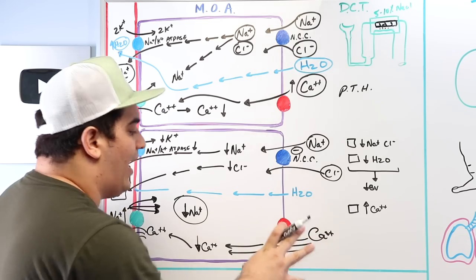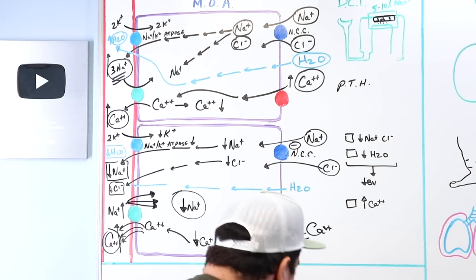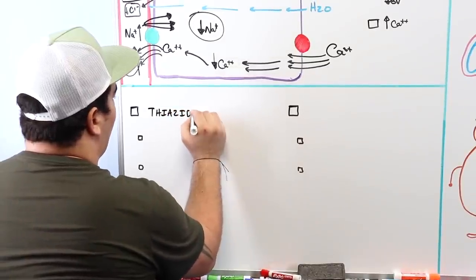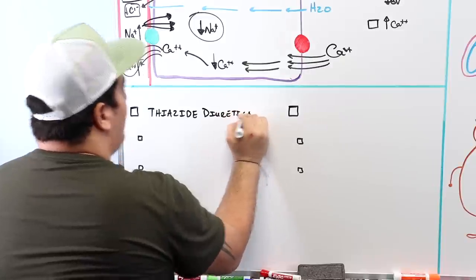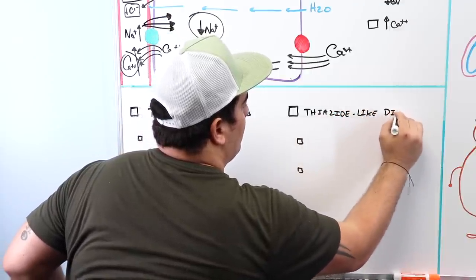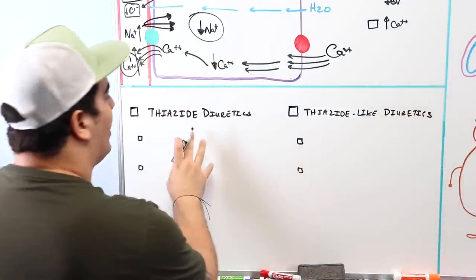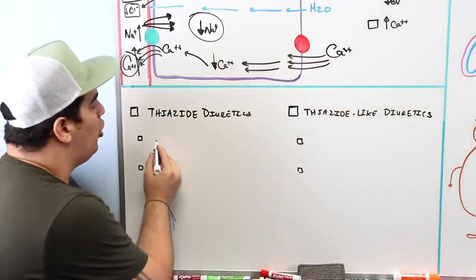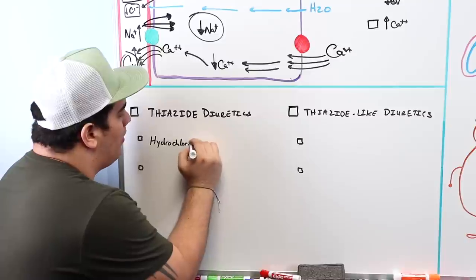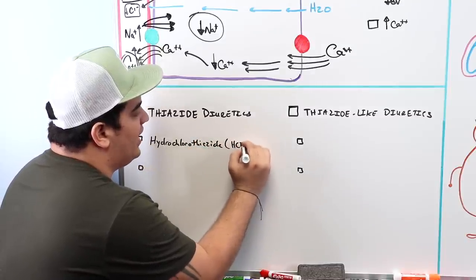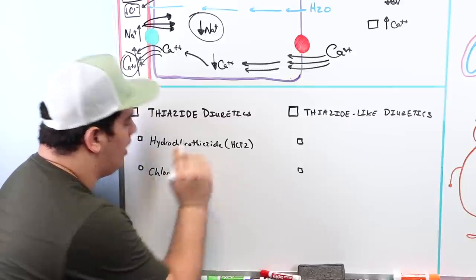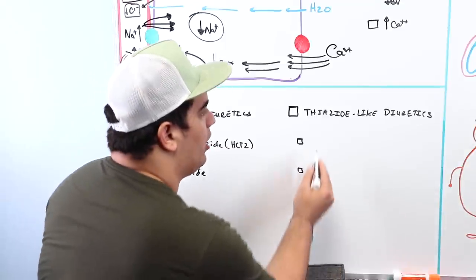There are two categories of drugs. The thiazide diuretics include hydrochlorothiazide (HCTZ) and chlorothiazide. The thiazide-like diuretics include chlorthalidone and metolazone.